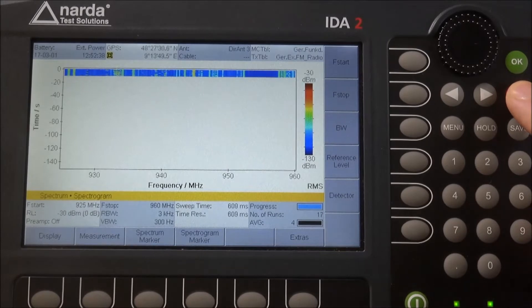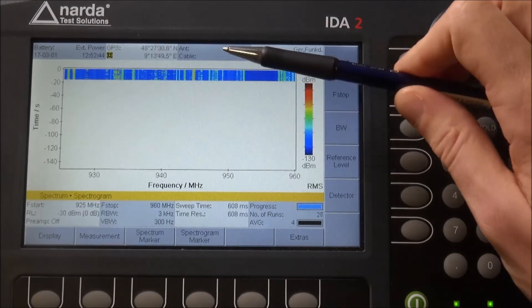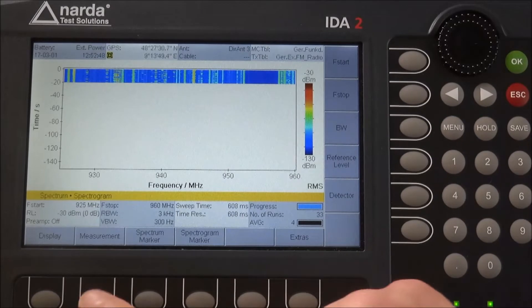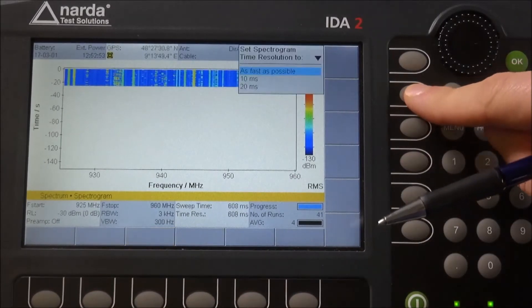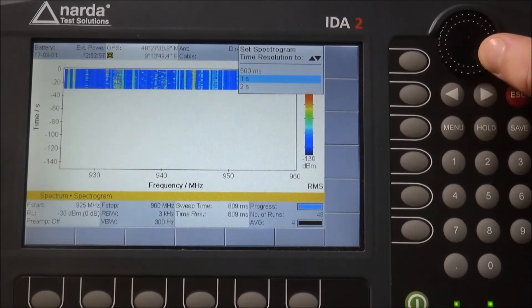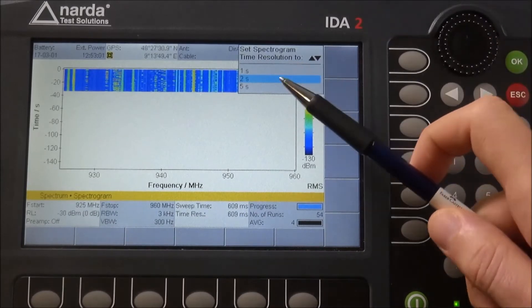Let's assume you want to display just every tenth or twentieth trace to create a one-day full spectrogram. In such a case, click on measurement, then time resolution, and based on that setting you can change the time resolution.